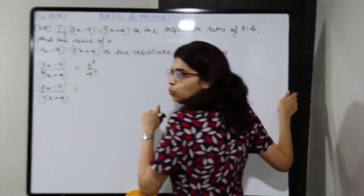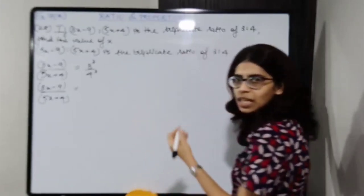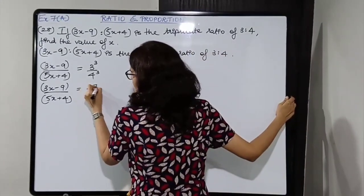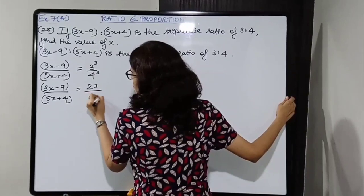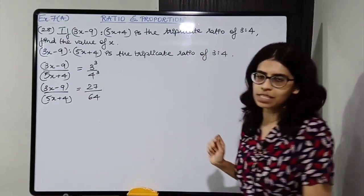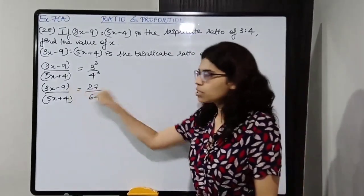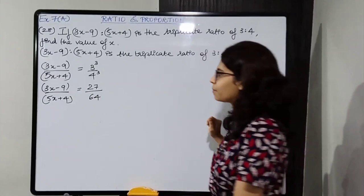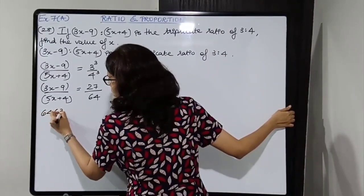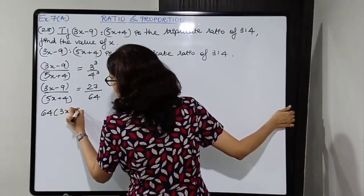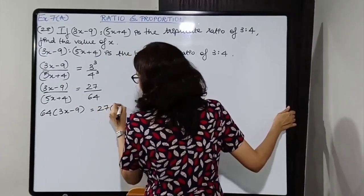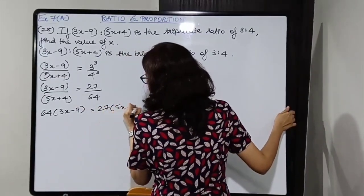3x minus 9 upon 5x plus 4 — in brackets — is equal to 3 cubed upon 4 cubed. 3 cubed: 3 times 3 is 9, times 3 is 27. 4 cubed: 4 times 4 is 16, times 4 is 64. Cross multiply: so 64 into 3x minus 9 is equal to 27 into 5x plus 4.